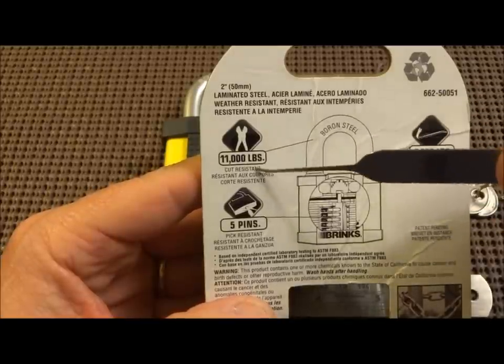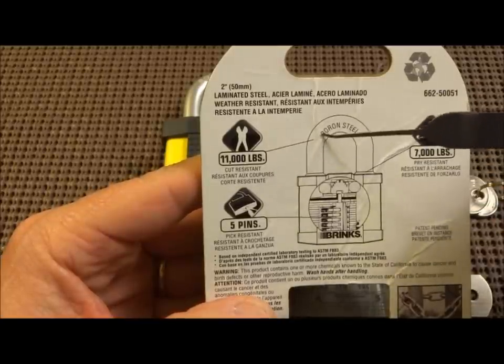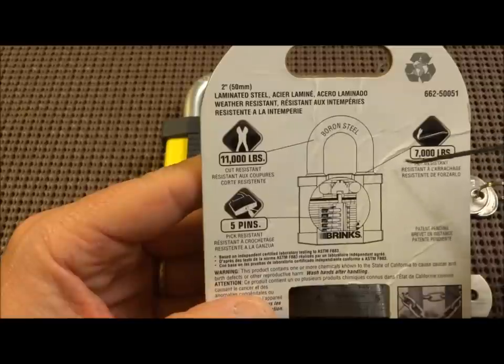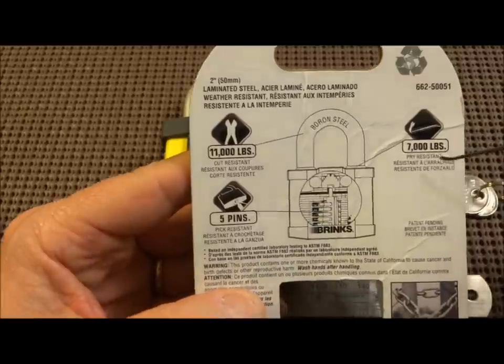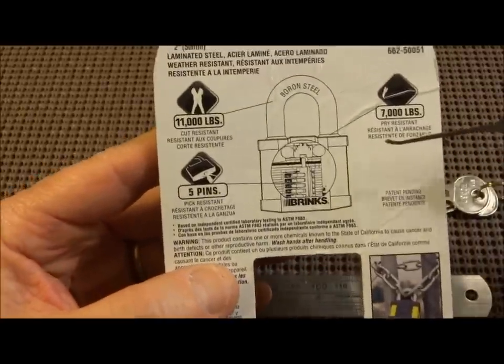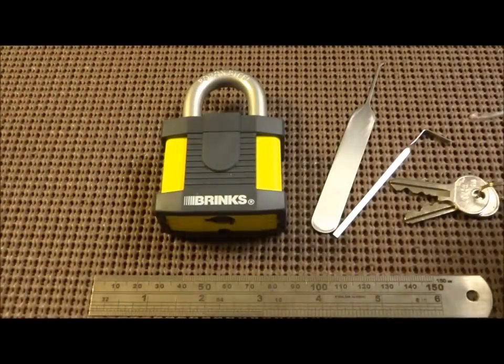It's a boron steel shackle, 11,000 pounds cut resistance, so we're not going to cut through that with a pocket knife and we can't pull it out either because it's got 17,000 pounds of pry resistance. So externally, this appears to be a pretty good 50 millimeter lock.